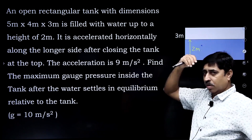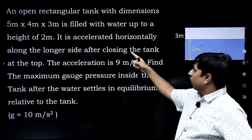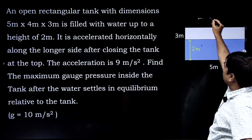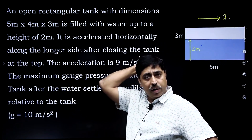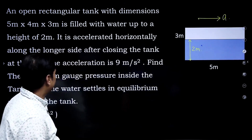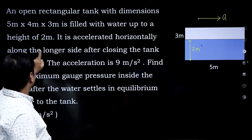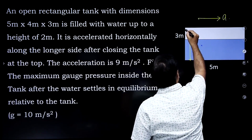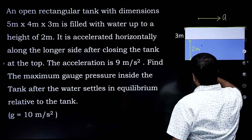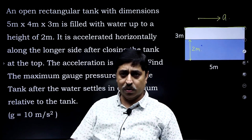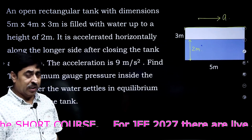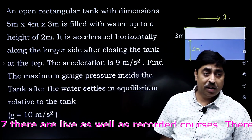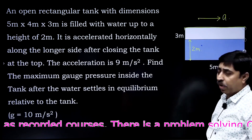So 1 meter is basically air. The whole tank is accelerated horizontally along the longer side with a very high acceleration of 9 meters per second squared. But the question says it is accelerated after closing the tank at the top with a lid. The question asks: find the maximum gauge pressure inside the tank after the water settles in equilibrium relative to the tank.